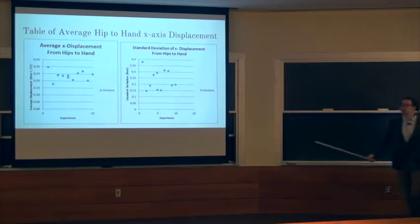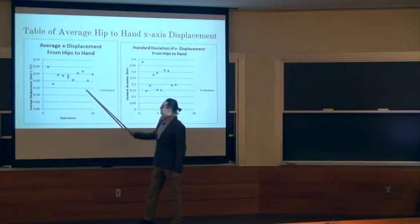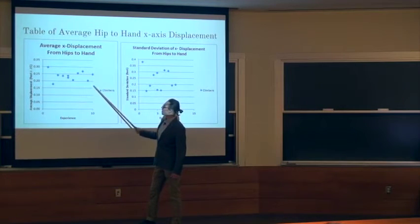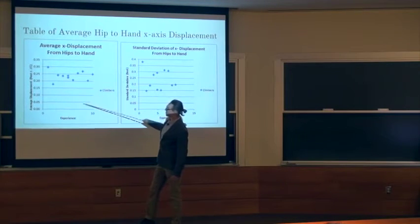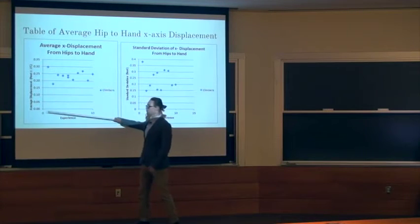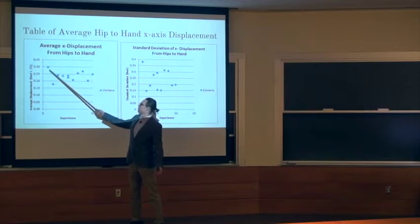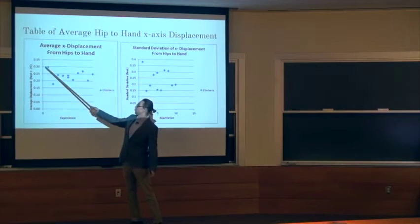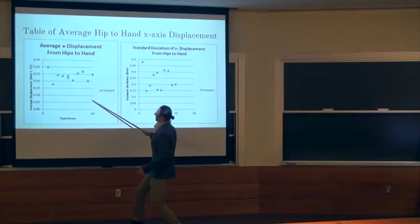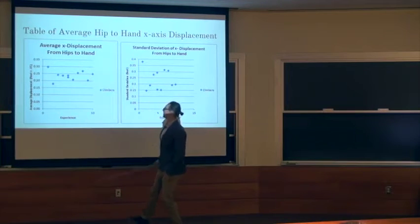The average plots. So again, I didn't see, I thought I might see that as experience increased, I might see less average displacement between the hips and the hands. And that's just horizontal displacement. But again, outside of this one climber who was inexperienced and had great displacement between hips and hands, that's kind of what I expected. But I expected something more like the more experienced climbers, their hips would be right under their hands. And I didn't see that.